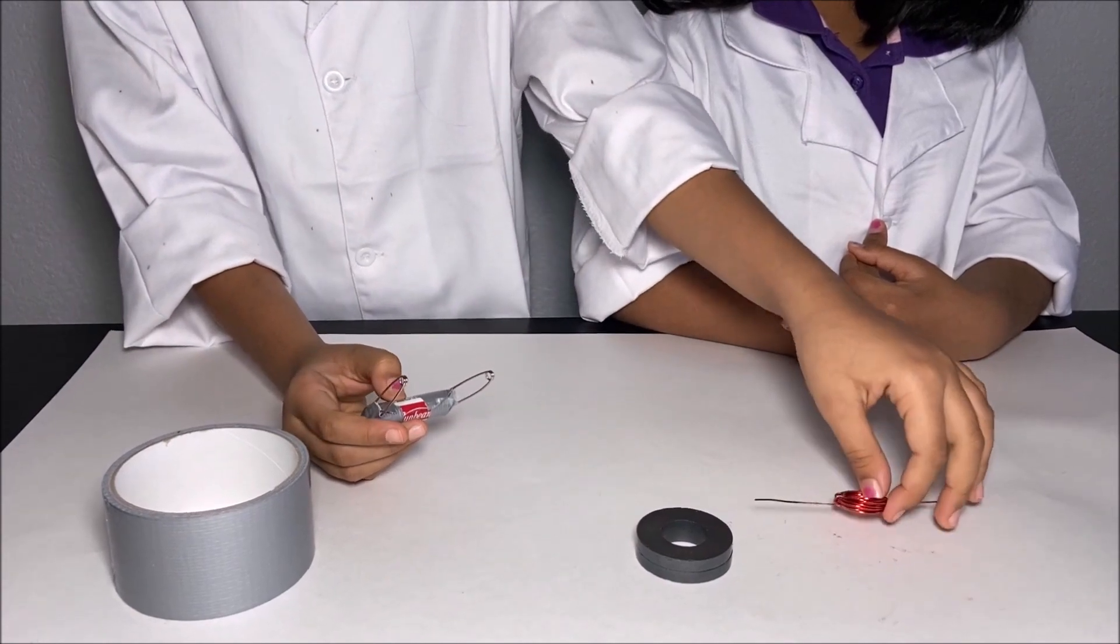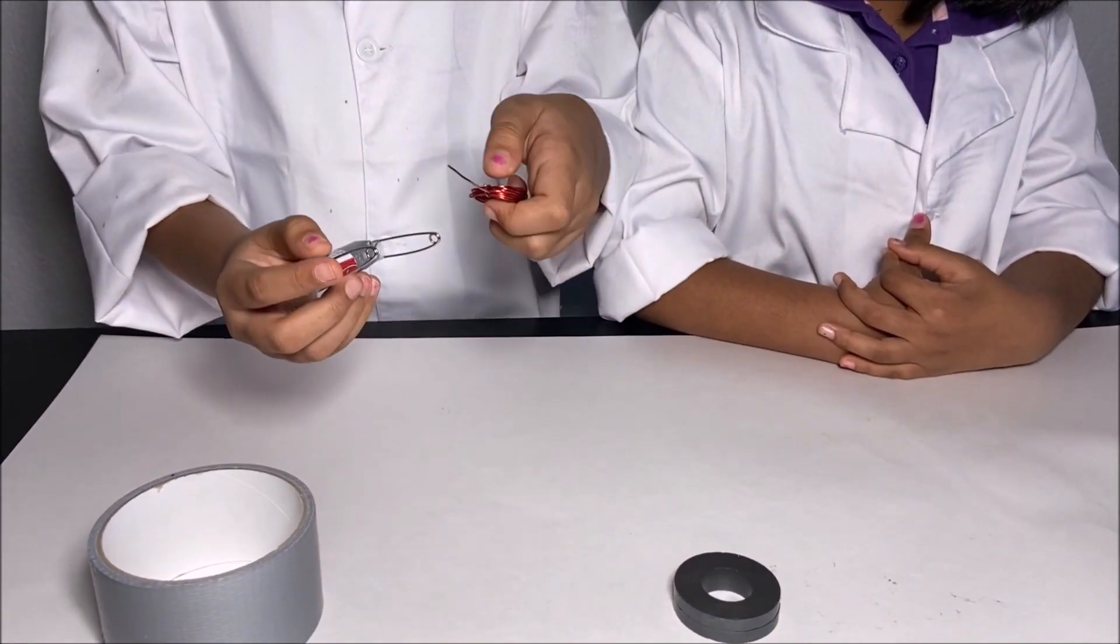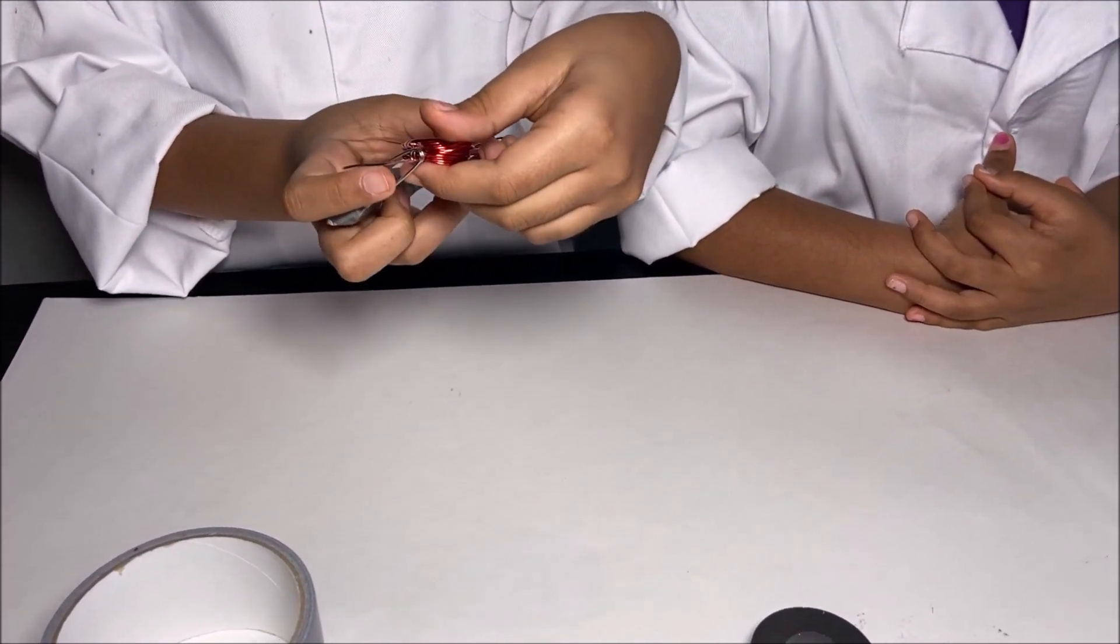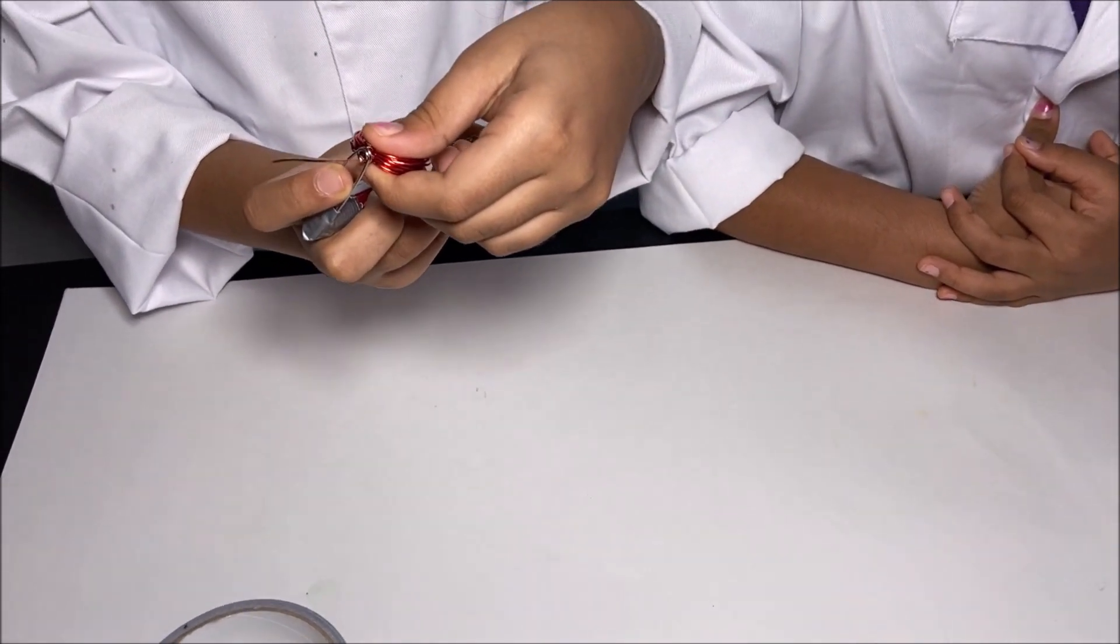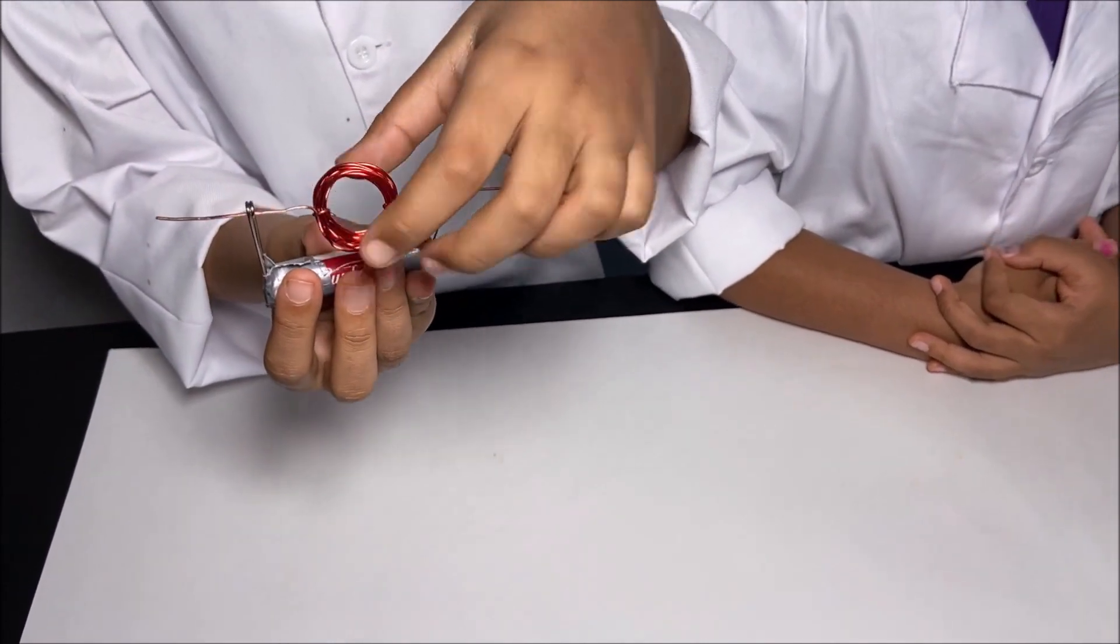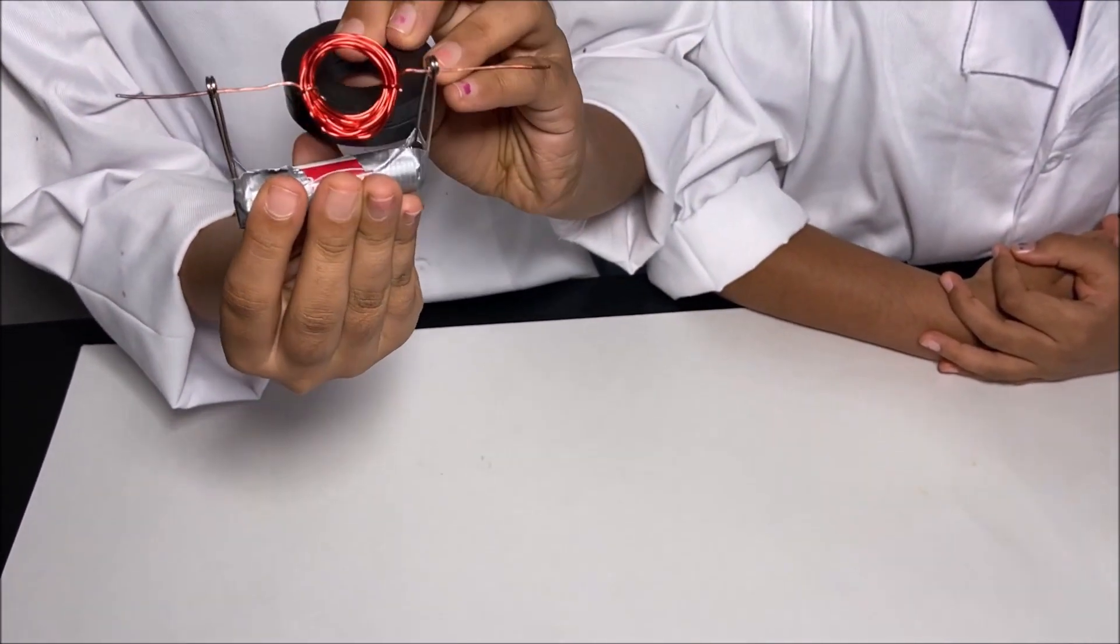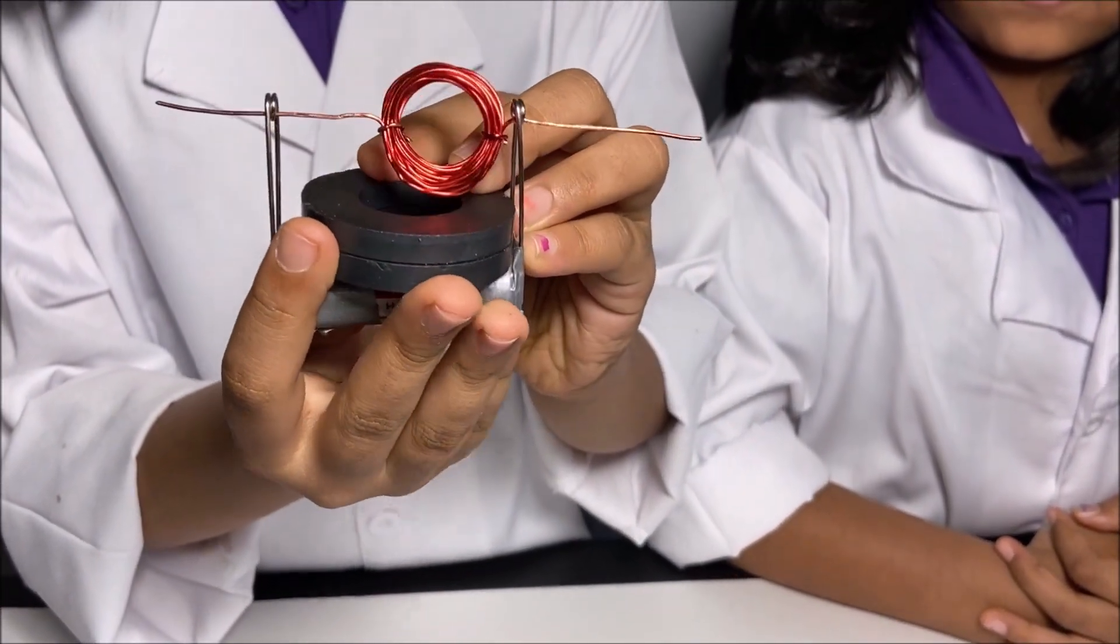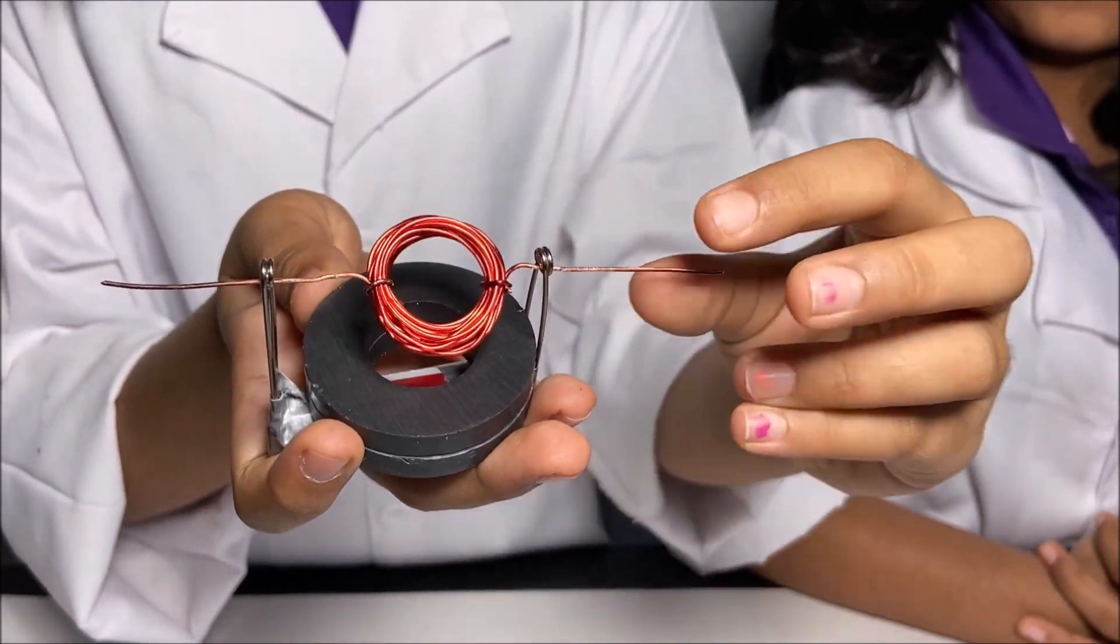Now I'm going to take the copper coil and put it through the holes of the pins. And then I'm going to take the permanent magnet and spin it.